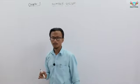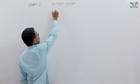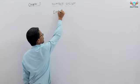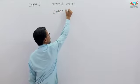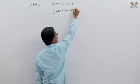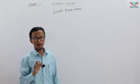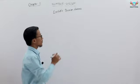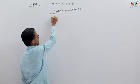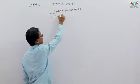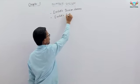First subtopic in this particular number system chapter is Euclid's division lemma. Euclid's division lemma is the first topic we'll discuss, and then Euclid's division algorithm.